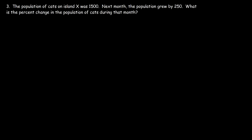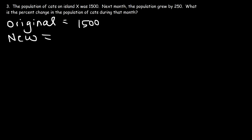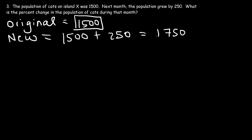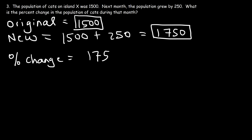Here's another one. The population of cats on island X was 1,500. Next month, the population grew by 250. What is the percent change in the population of cats during that month? The original value is 1,500 cats. The population grew by 250, so the new value is 1,500 plus 250, which gives us a new value of 1,750. The percent change is the new value of 1,750 minus the original value of 1,500, which equals 250.